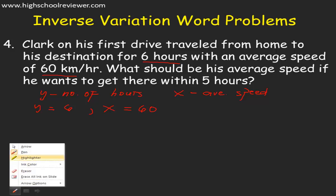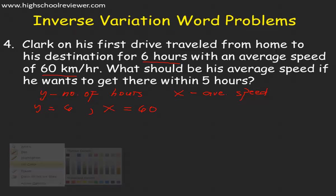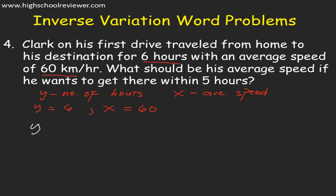We need to find the constant of proportionality K. Our equation is YX equals K. Y is 6 multiplied by X, which is 60, equals K. So 6 multiplied by 60 gives us 360. Our K is equal to 360.